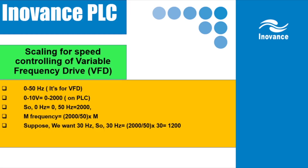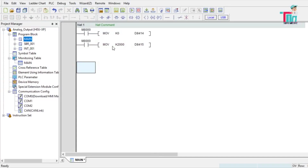Let M be the desired frequency. For 50 Hz the value is 2000, so the ratio is 2000 divided by 50 per hertz, and the output value for frequency M equals M multiplied by that ratio. For example, if we want 30 Hz: 2000 ÷ 50 × 30 = 1200. So we need to move 1200 to D8415 to get 30 Hz output on the VFD.